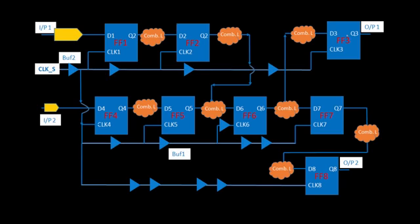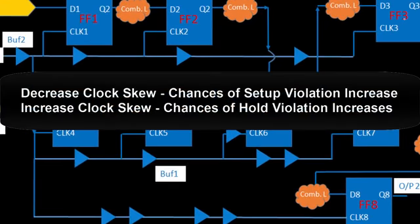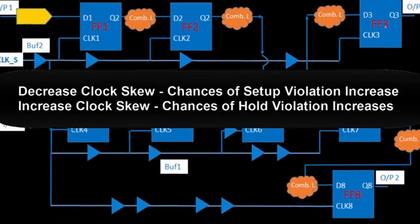it is going to affect the timing path between ff6 and ff3. Taking the previous example where we remove this particular buffer — if we remove it, the skew between ff2 and ff6 is going to decrease, but the skew between ff6 and ff3 is going to increase. If the skew decreases, chances of setup violation increase; if the skew increases, chances of hold violation increase.